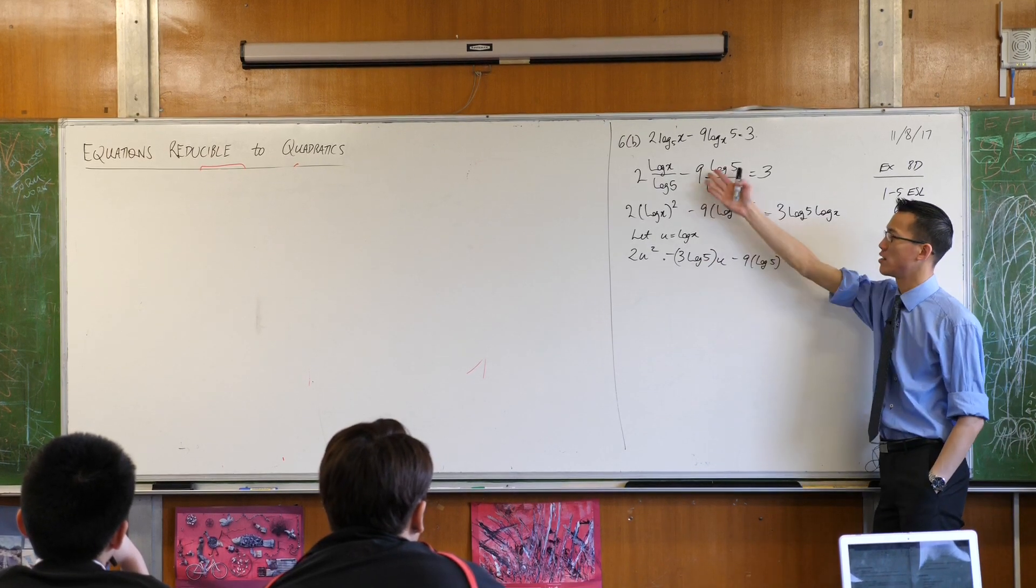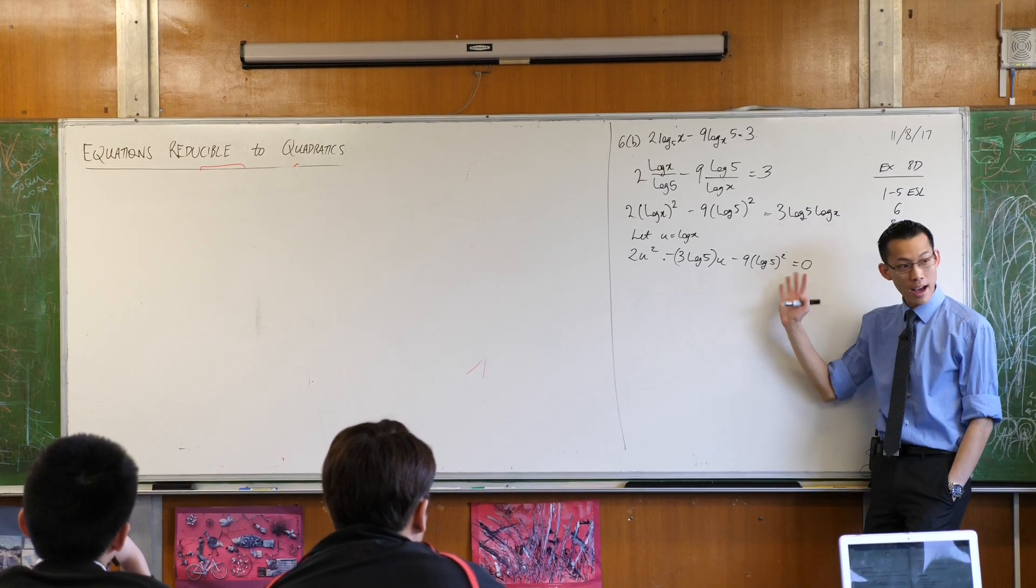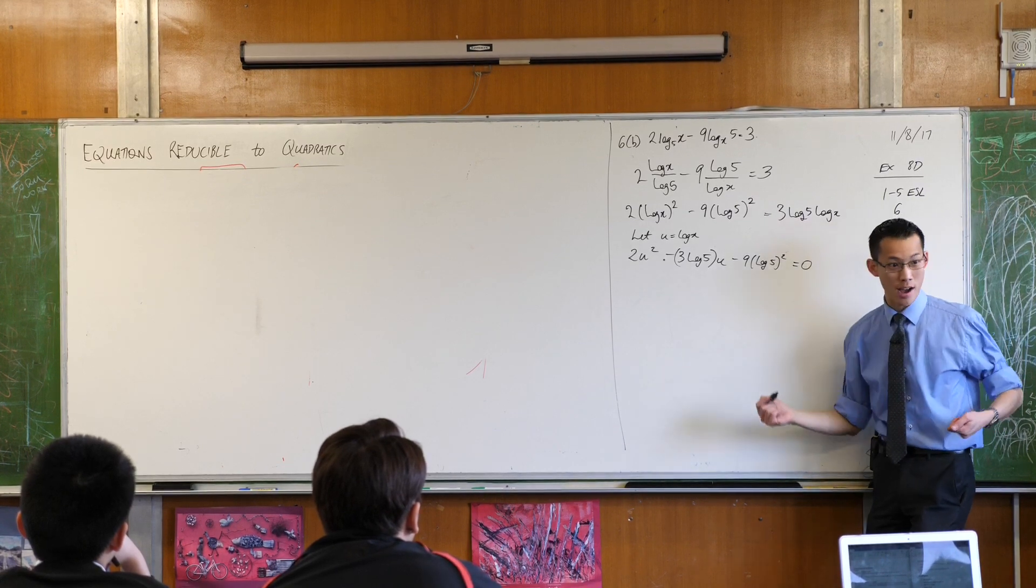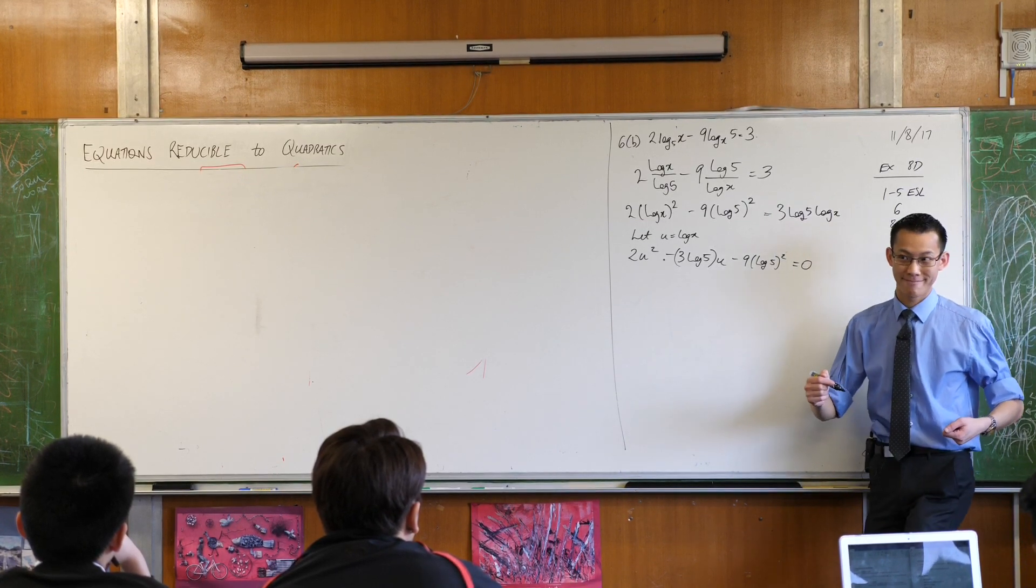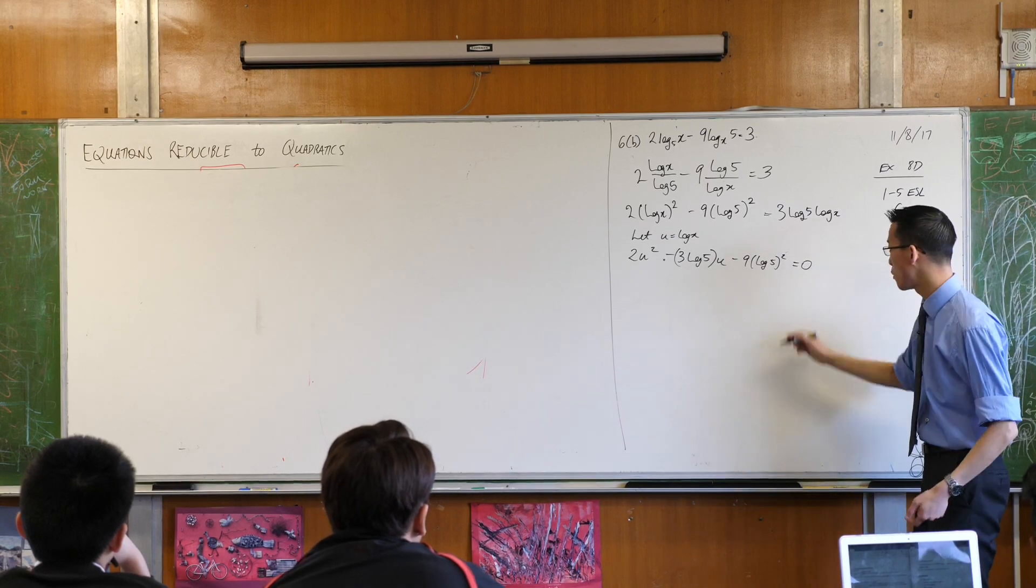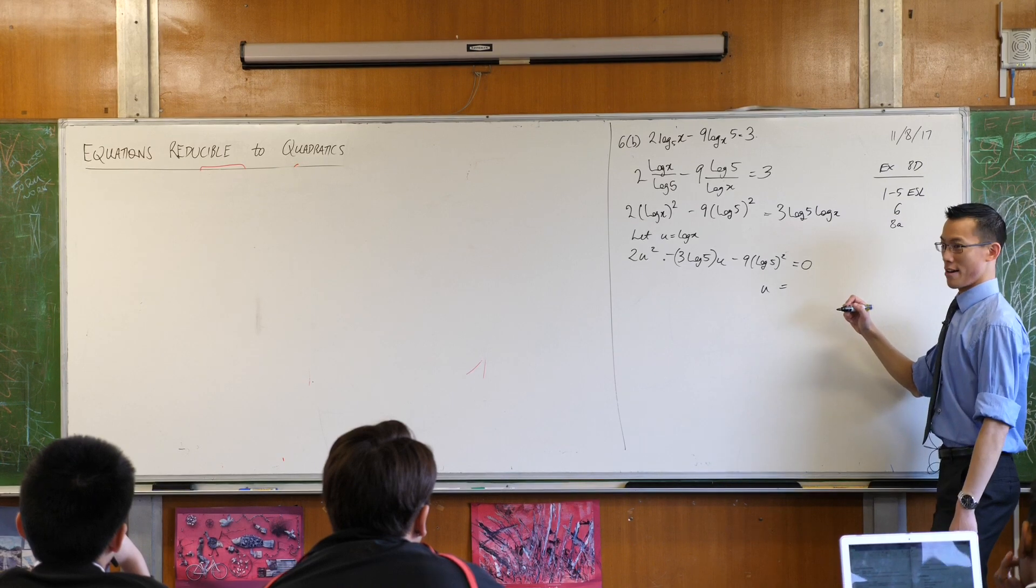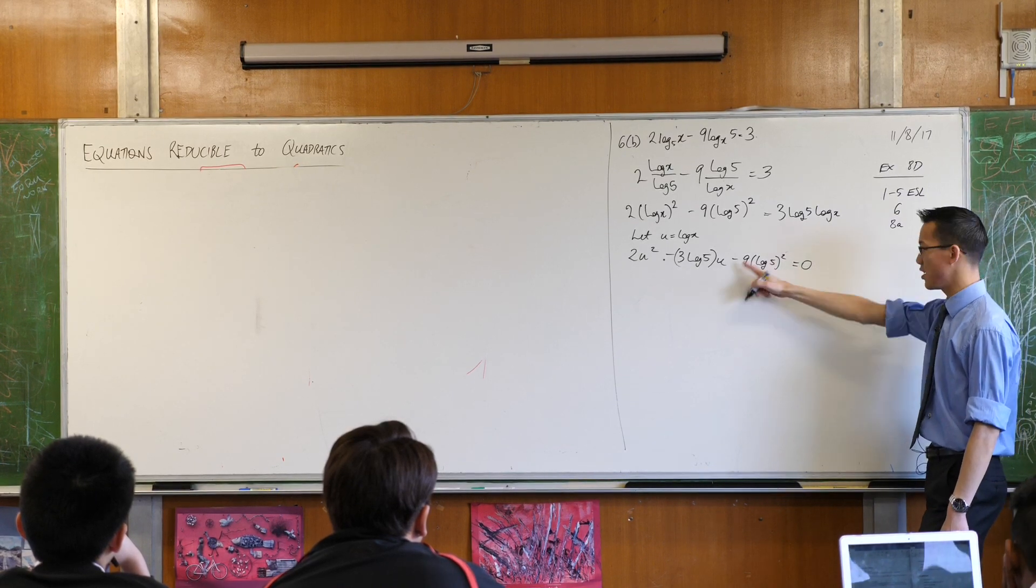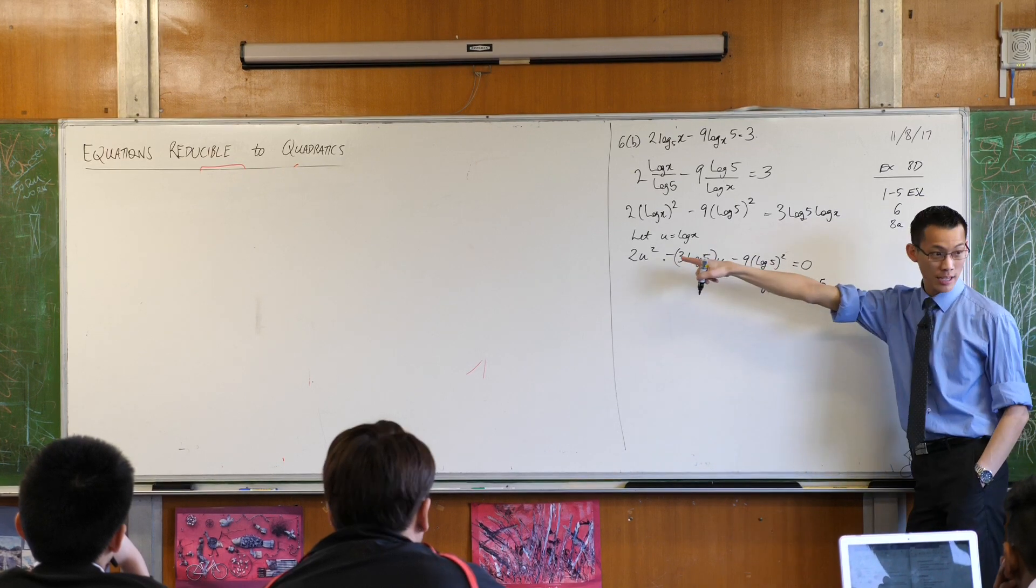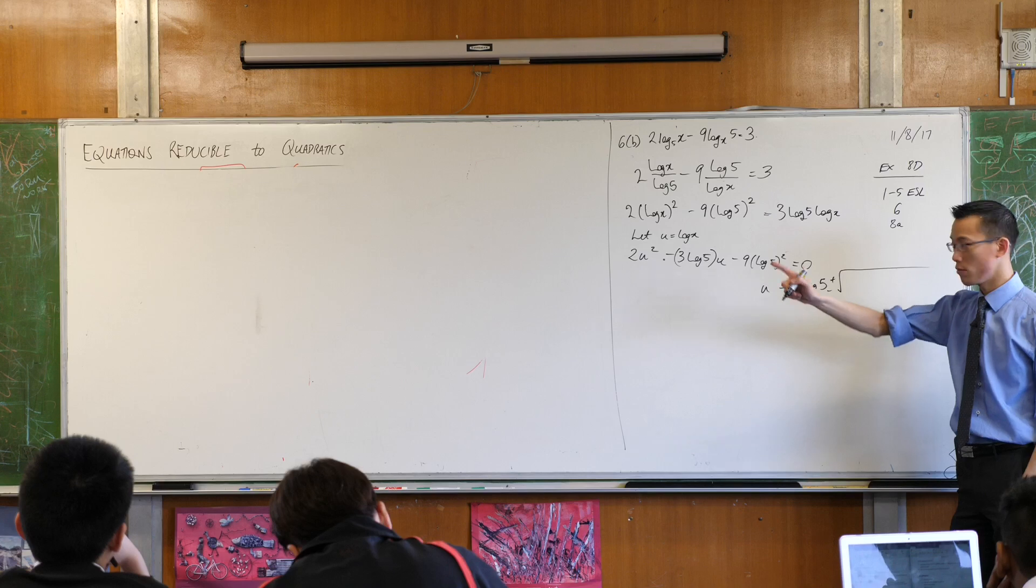So how can we deal with this without evaluating things? What do you do when you can't factorize a quadratic? You just go to the formula. I've got a formula for this. U is going to be equal to, take a deep breath, minus b, which is? It's just 3 log 5 because there's a double negative, plus or minus the square root of b squared, which in this case is? B squared.